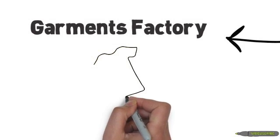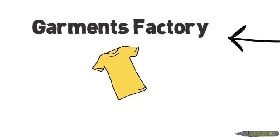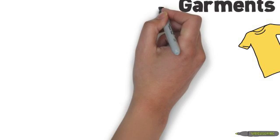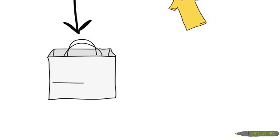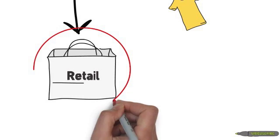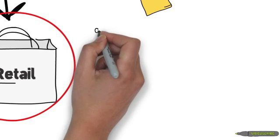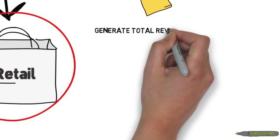The dyed fabrics go to the garment manufacturers. The garment manufacturer uses the fabrics and other accessories like zippers and rivets to make the apparels that we all use. The finished garments then make their way to the retail store for all of us to buy.